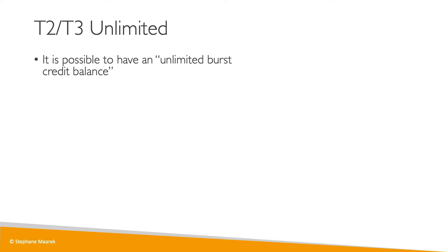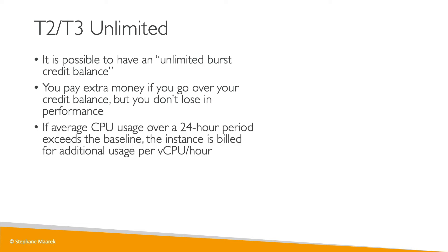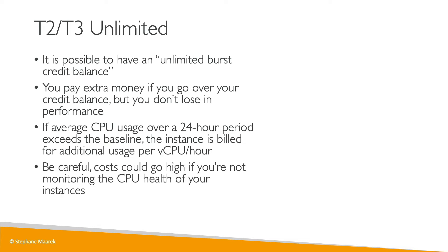So how can we address that? We have T2 and T3 Unlimited, which gives you an unlimited burst credit balance. You don't have a fixed credit balance — you can tap into it as much as you want. You'll pay extra money if you go over the credit balance, but you will not lose performance. If your CPU usage goes over the 24-hour baseline, you'll pay additionally for the number of vCPUs per hour used. So be careful: if your instance is always at 100% CPU, you will pay a lot of money.